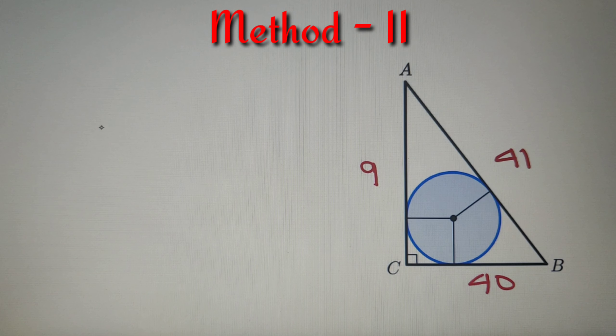Now let's solve our question by using the second method, that is the formula. So according to the formula, I can say that in-radius is equal to semi-perimeter minus hypotenuse, and this formula is only valid for a right angle triangle.